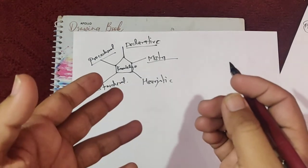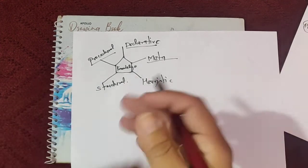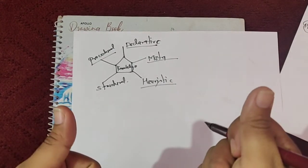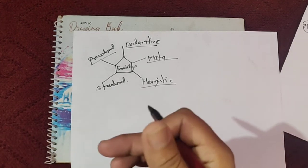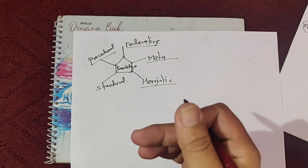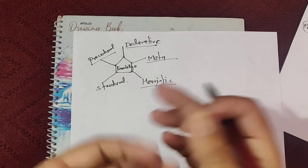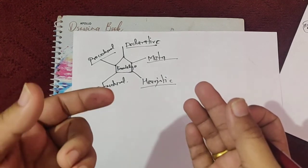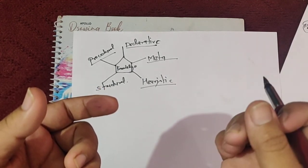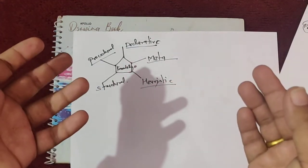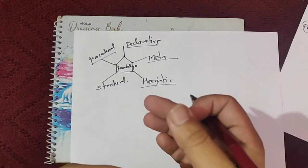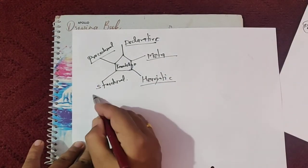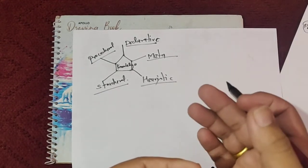Heuristic knowledge is also referred to as a rule of thumb. It is empirical as opposed to deterministic. For example: if I start seeing shops, then I am close to the market. From a single statement we draw a single conclusion — that is heuristic knowledge. If I am seeing shops, then I must be near the market.